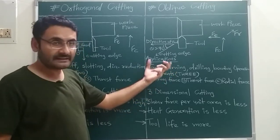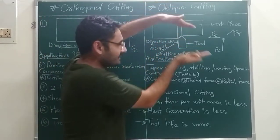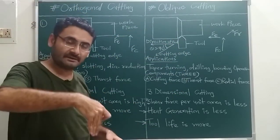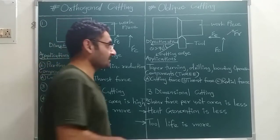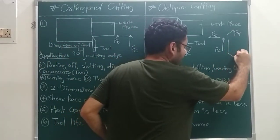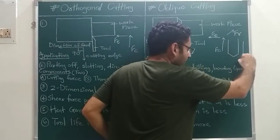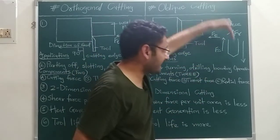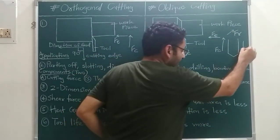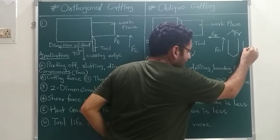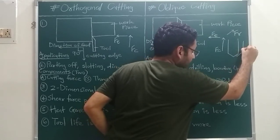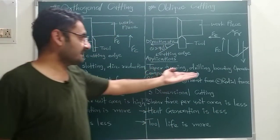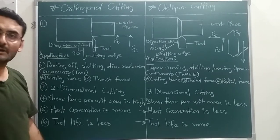Oblique cutting is used for taper turning operation, as you can see from the taper portion. It is also used for drilling and boring. For example, with a drill bit moving in the downward direction — that is the direction of feed — the edge of the tool makes an angle less than 90 degrees, which is why oblique cutting is used in drilling and boring operations.